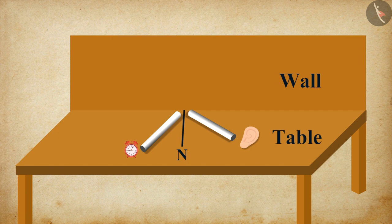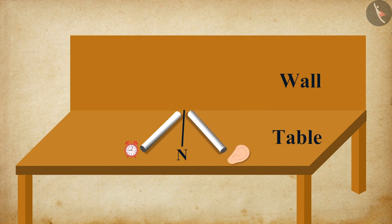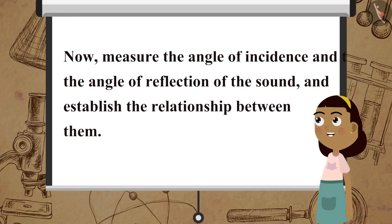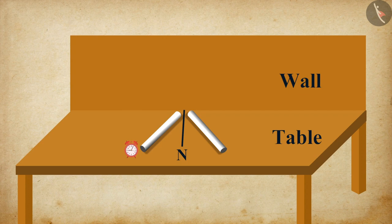To hear a clear sound of the ticking clock, adjust the position of the pipes as required. Now, measure the angle of incidence and the angle of reflection of the sound and establish the relationship between them. Change the position of the pipe on the right by lifting it vertically and observe what happens.